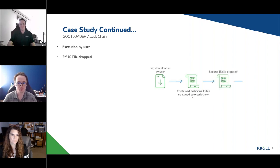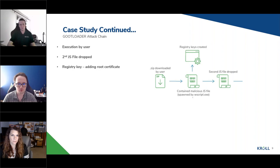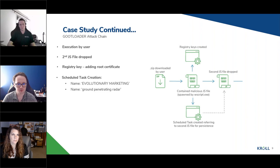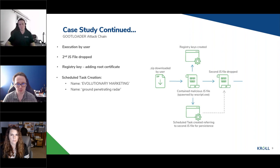Once the malicious JavaScript file is executed, a second JavaScript file is dropped, which we observed several times in the roaming Adobe directory. Going back to the initial scripts, this goes on to create a registry key that adds a root certificate. It then creates a scheduled task, typically pointing to the second JavaScript file for persistence. In other incident response cases, we also observed the execution of a Cobalt Strike DLL as part of that scheduled task — so it's somewhat interchangeable what was in that scheduled task.